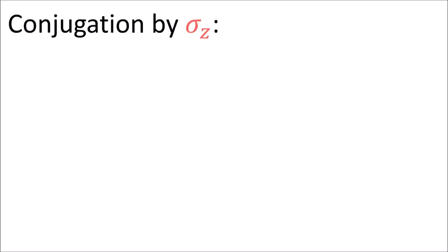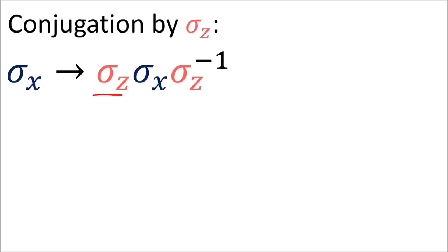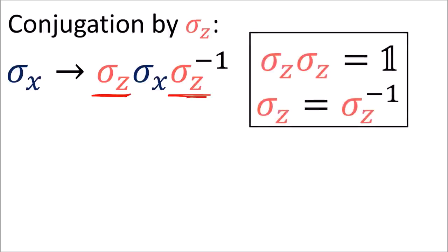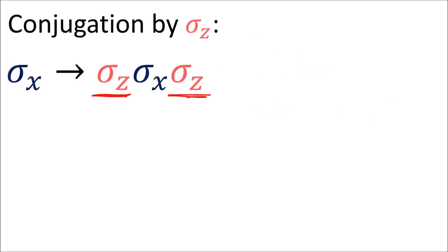For example, conjugating sigma x by sigma z looks like this. However, since sigma z squares to the identity, it is its own inverse, so we can just ignore the inverse symbol here. Since we know the sigma matrices anti-commute, we can flip the order of sigma x and sigma z and get a negative sign.